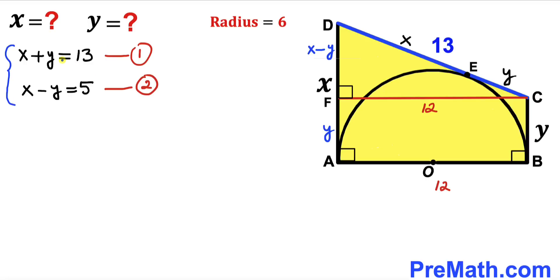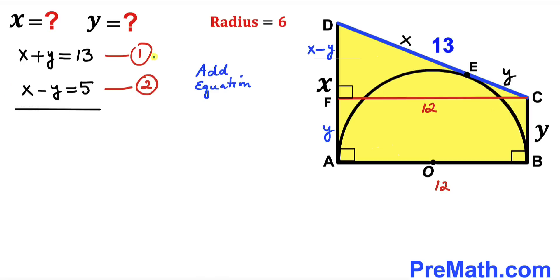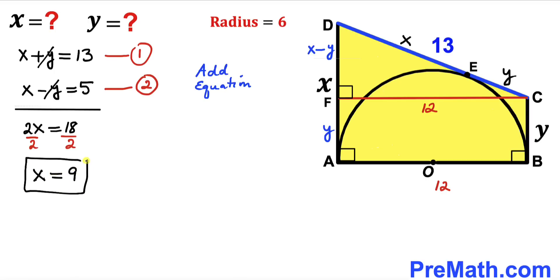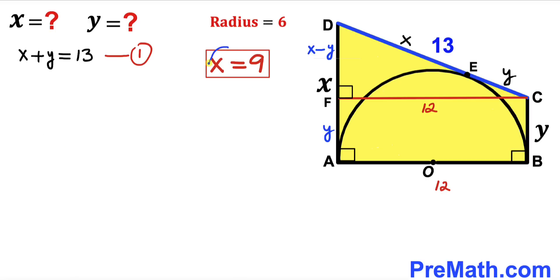We now solve the system of two equations. Adding equation 1 (X + Y = 13) and equation 2 (X − Y = 5): the Y terms cancel, giving 2X = 18. Dividing both sides by 2, our X value turns out to be 9 units.